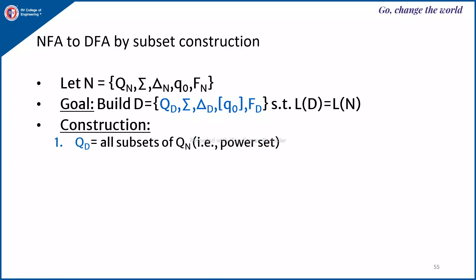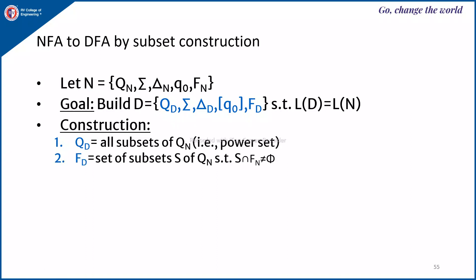The construction procedure: Qd is the set of equivalent DFA states, which is all subsets of Qn — that is, the power set. If you have three states in the NFA, you will have 2 to the power 3, which is eight states, being all subsets of the NFA states. Sigma is the same, delta will change, the start state will be the same but within angle brackets, and Fd will change.